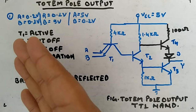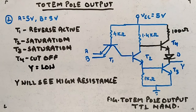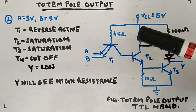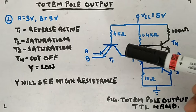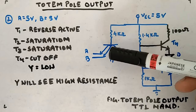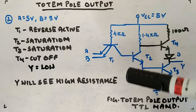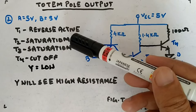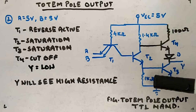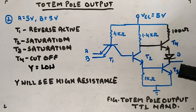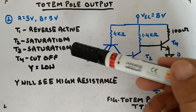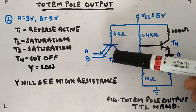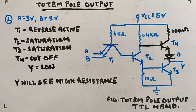Now I am going to show you the second part: when both inputs are high. When both inputs are high, T1 will be in reverse active — this junction is reverse biased and this one is forward biased — so it behaves as if collector and emitter are swapped. It provides sufficient current to drive T2 into saturation. Since T2 is in saturation, it provides emitter current; part of that goes to the 1 kilohm resistor and most goes to T3. T3 also gets sufficient current to go into saturation. So T1 is in reverse active and T2, T3 are both in saturation.